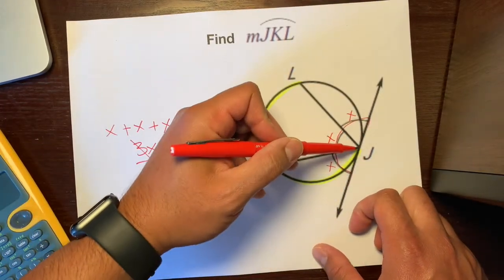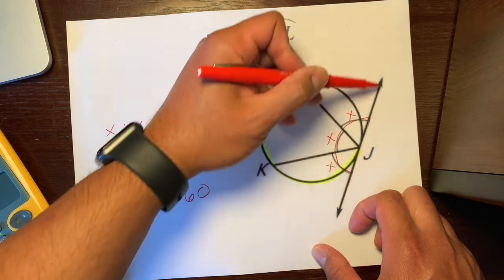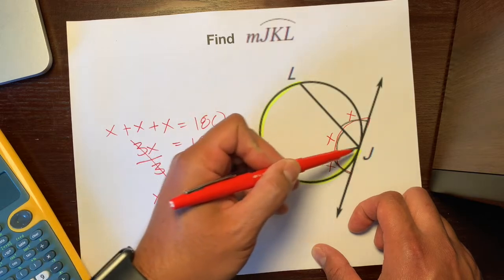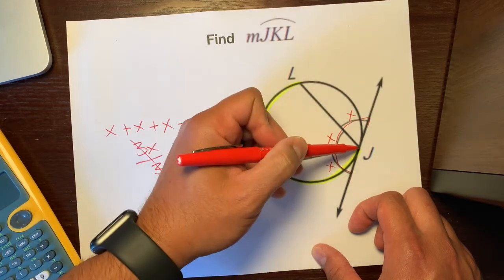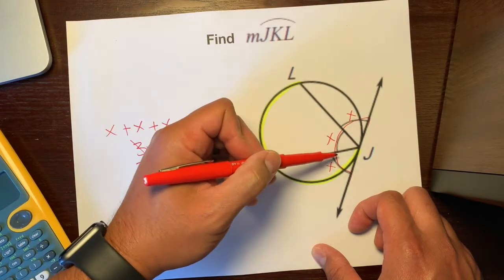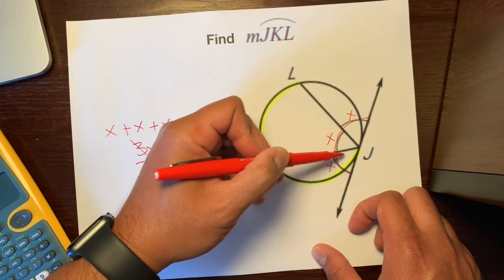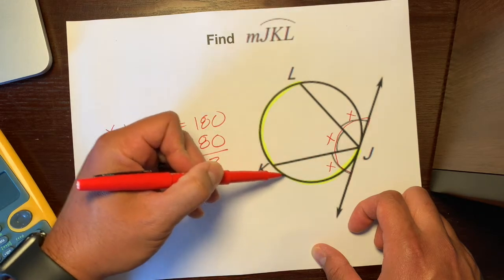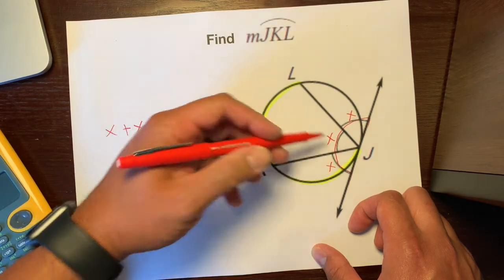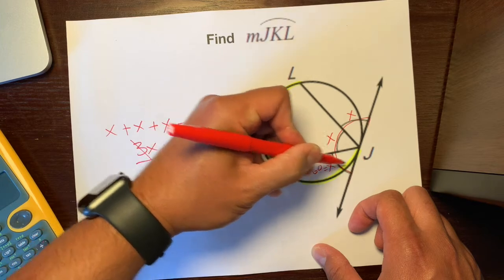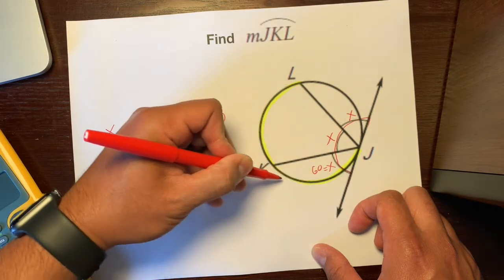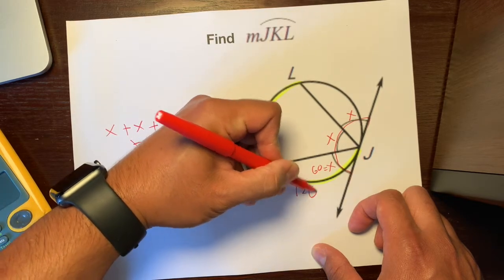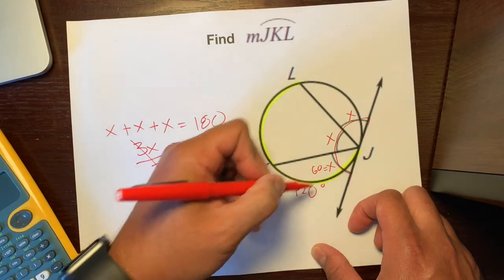So thinking back, this is a tangent line because it touches the circle at just one point. And here's a secant. Oh, this is a chord because it touches the circle twice. And a tangent and a chord, its measure, that angle measure right here, is half the measure of the arc that it's eating or it's intercepting. So if this X is 60 degrees and it's half the measure of this angle or this arc right here, this arc should be 120 degrees because that's half.